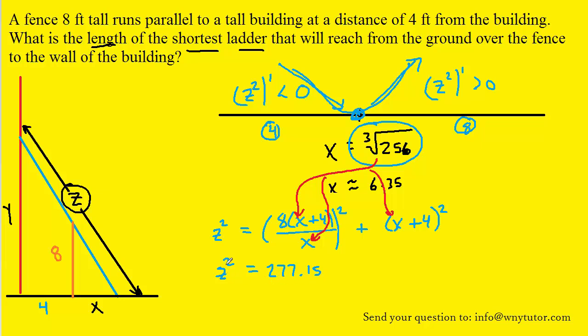Remember, however, we don't want z squared. We're trying to find the minimum value of z. Here's the z in the original picture. So basically, we just have to square root both sides. And when we do that, we get the minimum value of z to be roughly 16.65. And that is indeed the correct answer.